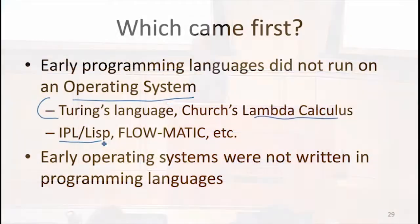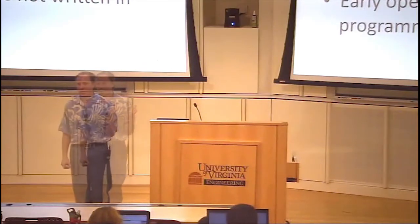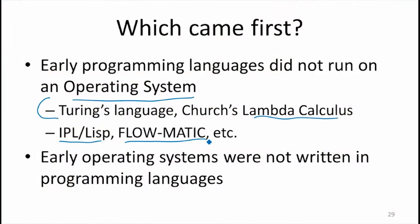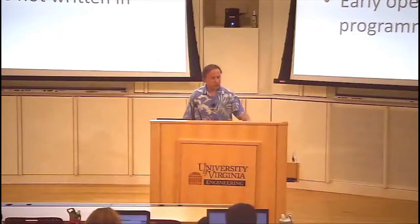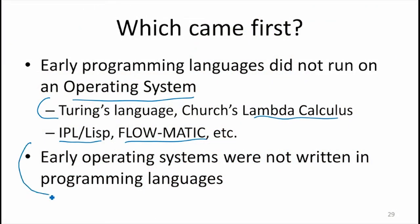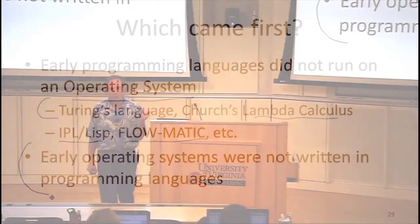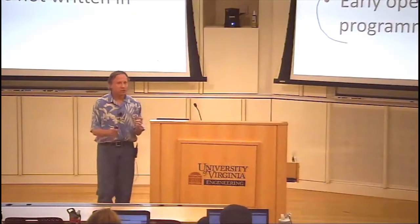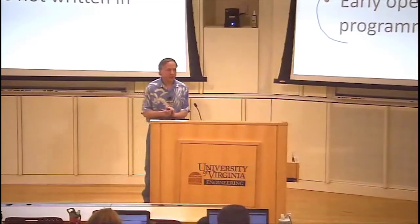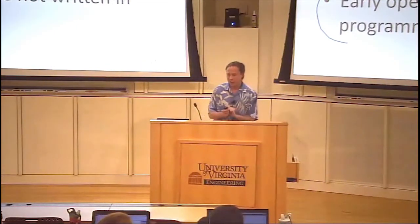Then there were things that we think more like programming languages today that did actually have compilers and generate code that ran on machines. Did those depend on operating systems, the earliest programming languages? So at least if our definition of an operating system is something that manages resources, that limits what different programs can do with your machine, they certainly didn't. All of these early languages were running with complete control over the machine. The early operating systems, they weren't written in programming languages, they were written in assembly code. The earliest ones might have even been written before having assemblers, depending on where you define what makes something start to be an operating system. So they're really very different things.